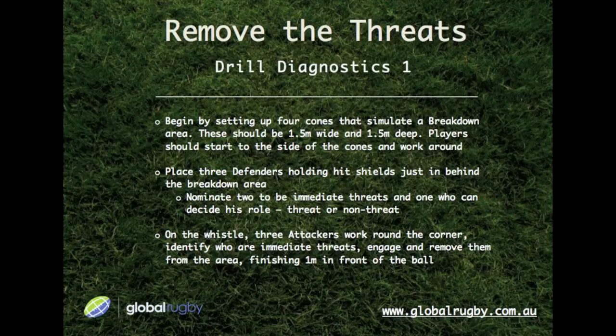Play should start to the side of the cones and work around. Place three defenders holding hit shields just in behind the breakdown area. Nominate two to be immediate threats and one who can decide his role — threat or non-threat. On the whistle, three attackers work around the corner, identify who are immediate threats, engage and remove them.